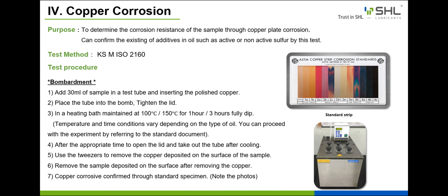Next, we learn about the test method of copper corrosion. The purpose is to determine the corrosion resistance of the sample through copper plate corrosion. This can confirm the existence of additives in oil such as active or non-active sulfur. The lower the copper corrosion rating, the better. The copper corrosion scale is: 1A, 1B, 2A, 2B, 2C, 2D, 2E, 3A, 3B, 4A, 4B, 4C. KS method: KSM ISO 2160.